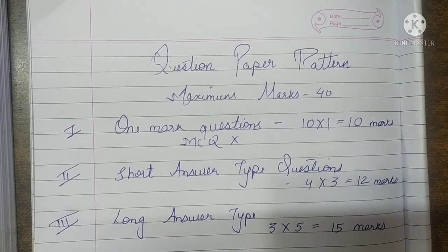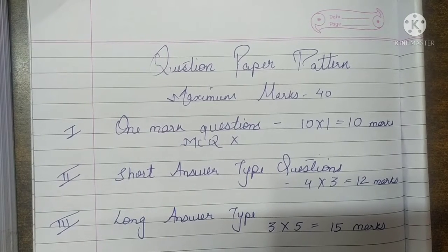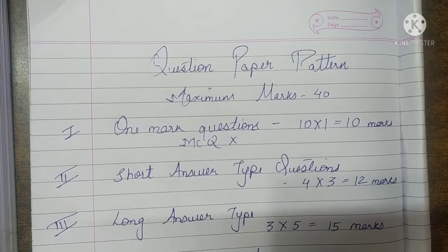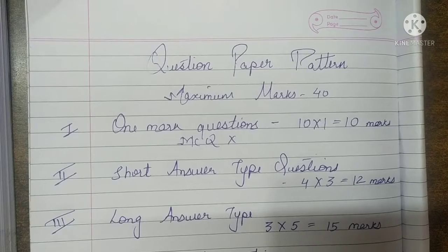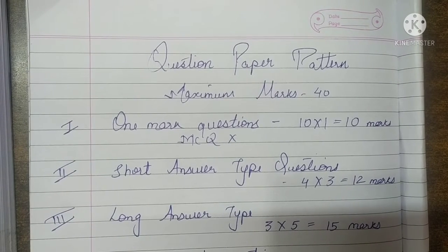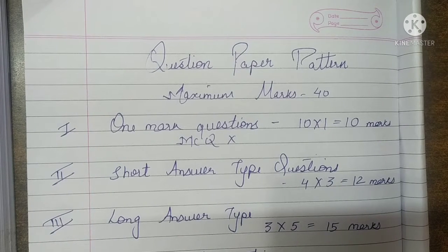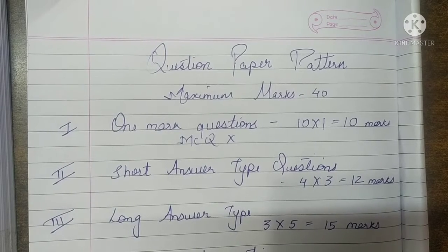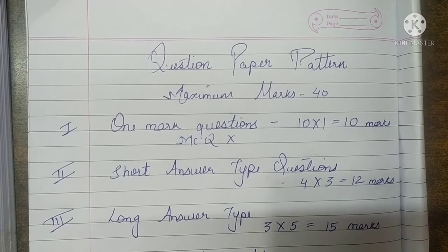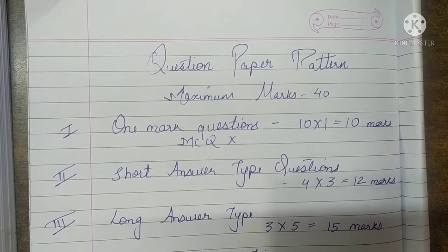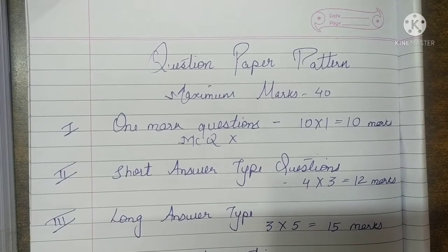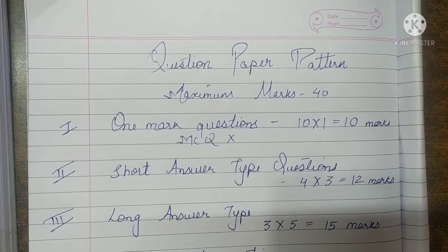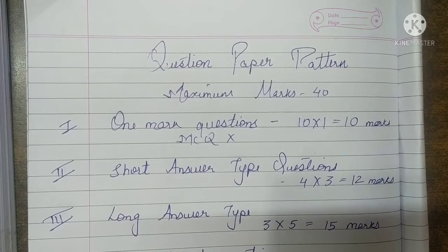These are 3 different sections. Then section 4 will contain map-based questions. Remember, it will not be the same as what you did in previous classes — simply locate the place. No, it will be locate and identify. It can be identification also, like: identify the place where the first Congress meeting took place, or the place where Jallianwala Bagh massacre took place. You have to identify the place and then locate, or it can already be located on the map and you have to identify. So it can be locate and identify, identify and locate, or simply the name will be given and you will be asked to locate it. This different variety of questions will be there in map-based — 3 different questions of 1 mark each, so 3 marks are given to map-based questions. This total will be of 40 marks, that is the maximum marks.